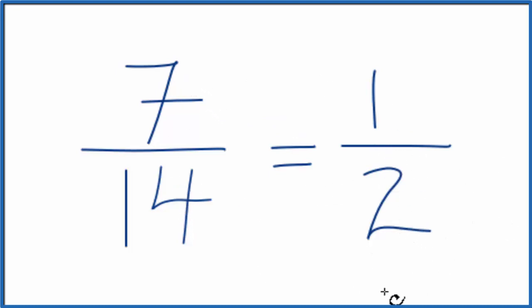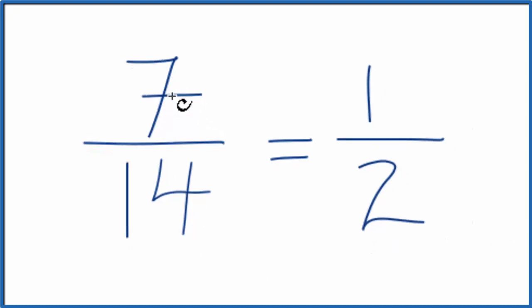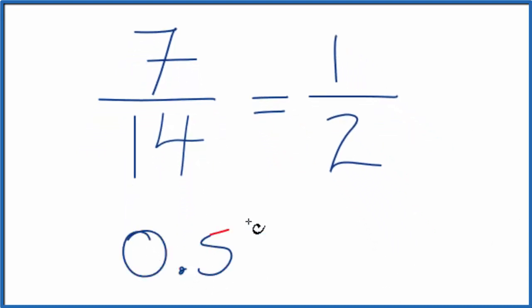They're equivalent fractions. If you took your calculator, divided 7 by 14, you'd get 0.5. If you divided 1 by 2, you'd get 0.5.